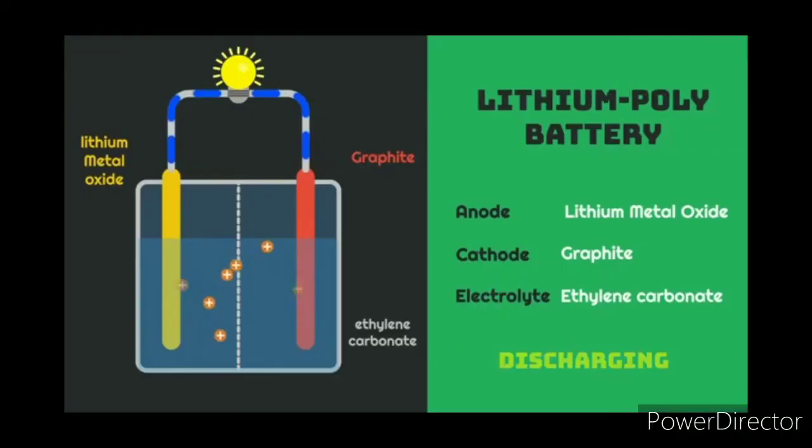Next is lithium polymer batteries. Here the anode used is lithium metal oxide and cathode is graphite. Electrolyte is ethylene carbonate. As you can see here, positively charged lithium ions flow from the anode to cathode and thereby electric current is produced. While we are recharging the battery, the same process is reversed. The ions travel from the graphite to the anode which is lithium metal oxide.